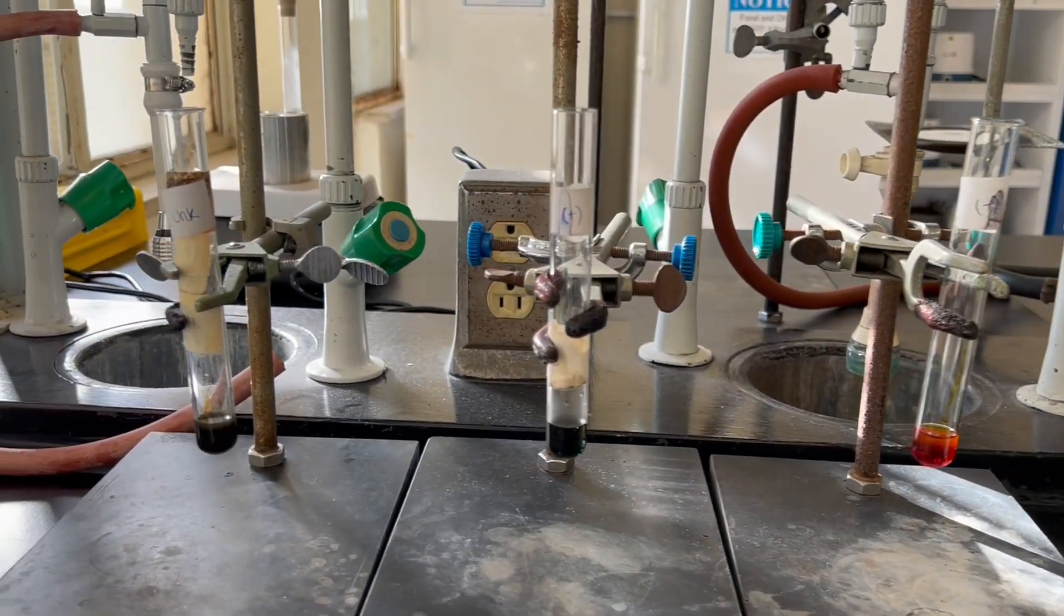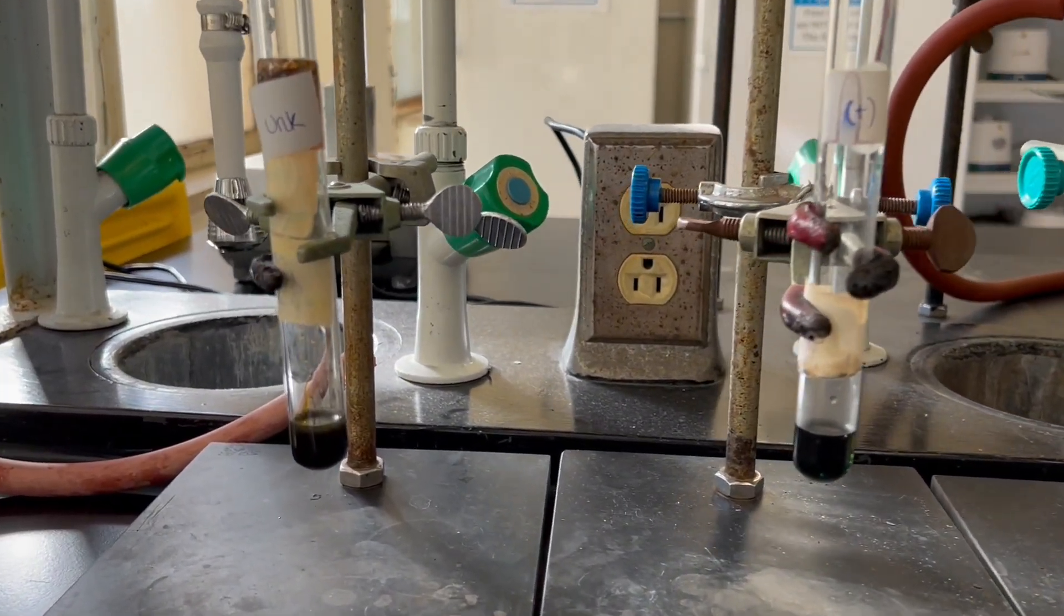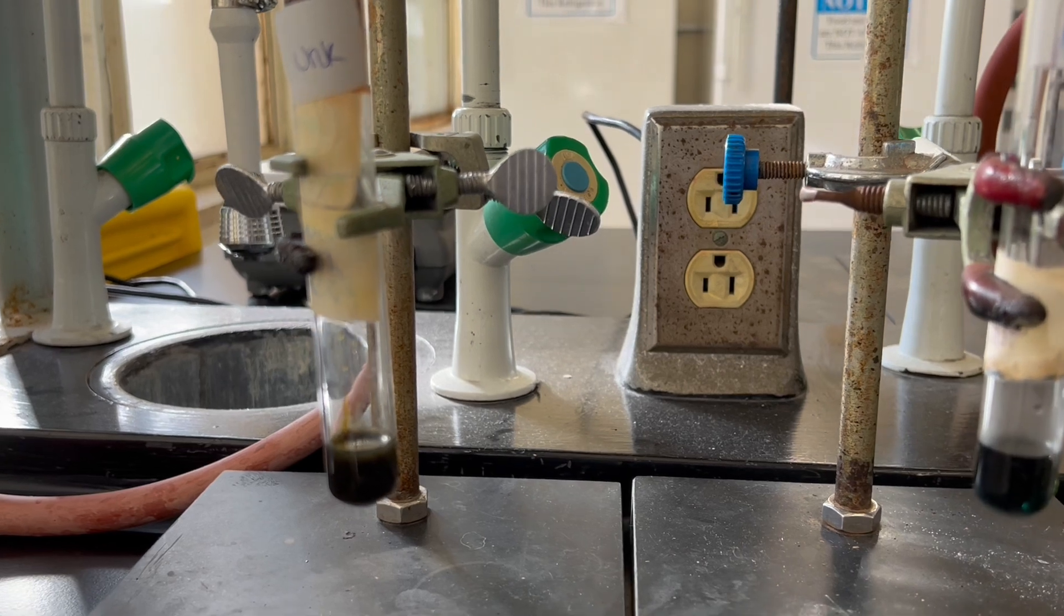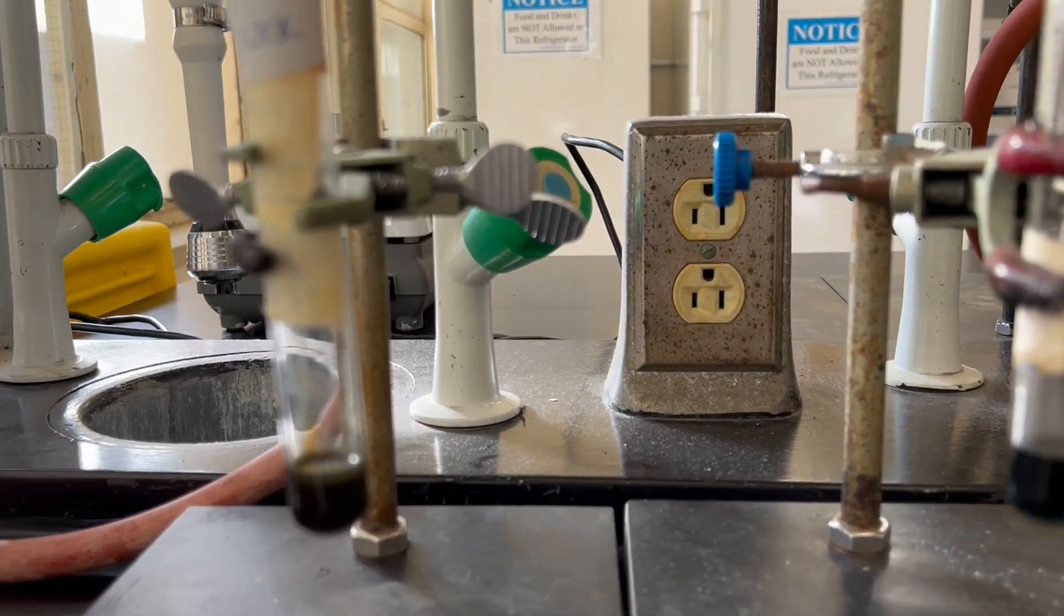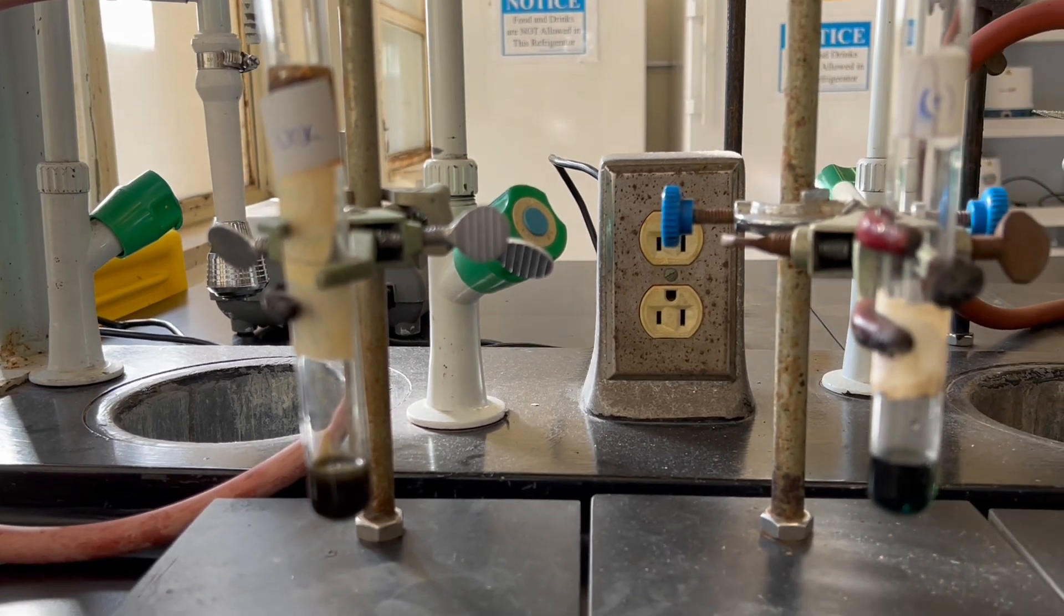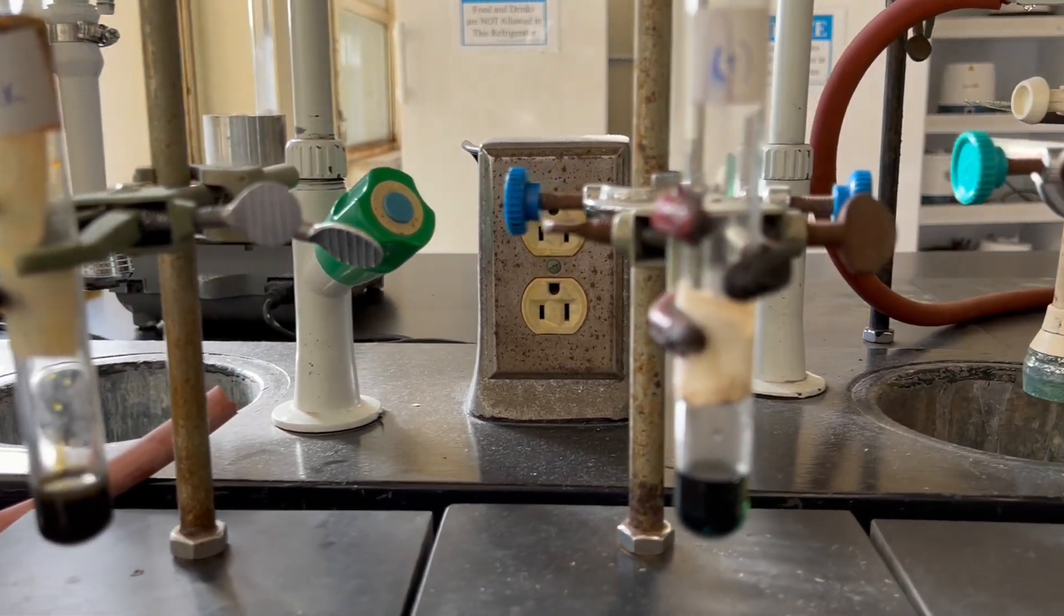As we can see, the test tube containing our unknown shares a very similar dark shade of green with the positive control test tube. This indicates a positive test, and our unknown might be a primary alcohol, secondary alcohol, or aldehyde.